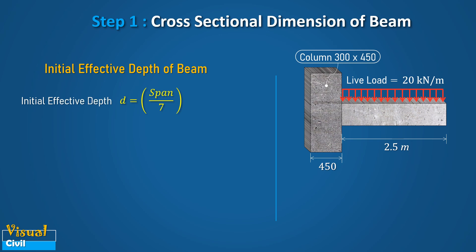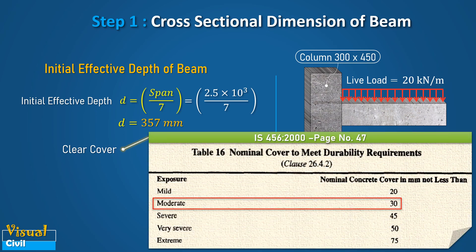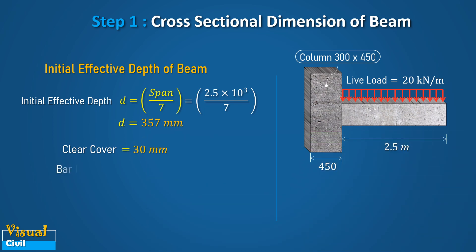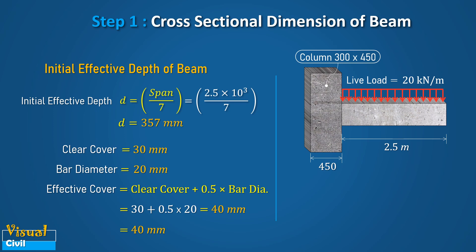With a span of 2.5 meters and the ratio of 7, we get the initial effective depth as 357 mm. Assuming a nominal clear cover by referring to table 16 of IS 456 for moderate exposure as 30 mm and bar diameter as 20 mm, we calculate the effective cover by adding the clear cover and half the bar diameter, giving an effective cover of 40 mm.